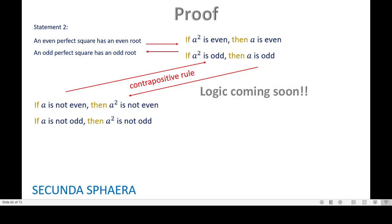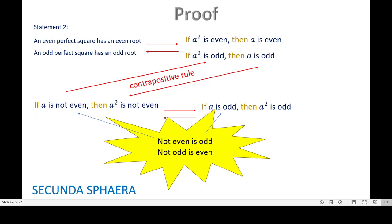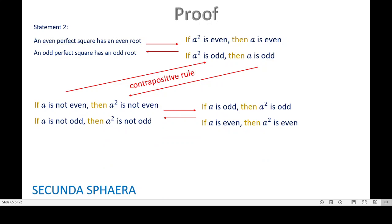There will be videos on logic coming soon, but for now you can check this on the internet or look for a link in the description. Now, 'not even' is just a complicated way of saying odd, and 'not odd' is even. So the first contrapositive becomes: if a is odd, then a squared is odd. And the second becomes: if a is even, then a squared is even.